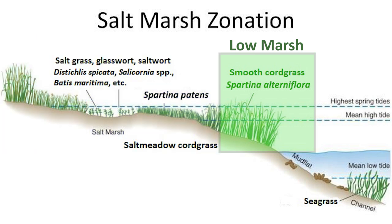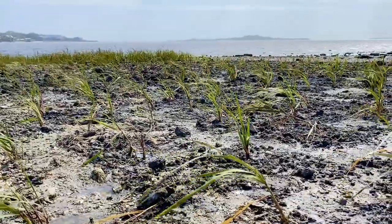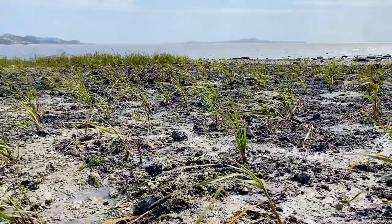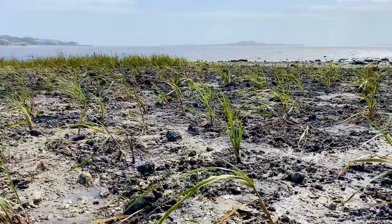The low marsh zone occurs along the seaward edge of the salt marsh. It is flooded daily and exposed during low tide. Exact elevations may vary, but a good general rule is that the low marsh extends from mean sea level at the lowest to the mean high tide line at the highest. Generally, you would only want to install smooth cordgrass, or Spartina alterniflora, in this zone for a marsh-based project.